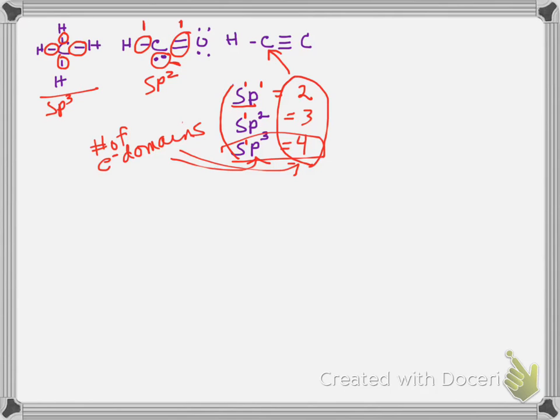The last example here is where I have this carbon. I'm going to talk about the hybridization around this carbon. It has 1, 2 electron domains. So that's going to be sp hybridized. Pretty simple, right? Let's take a look at sigma and pi bonds.